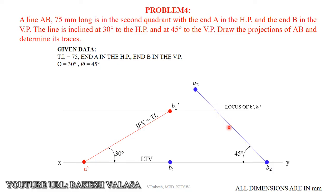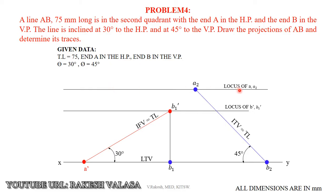This line from B2 to A2 makes 45 degrees to the VP and is the initial top view, which represents the true length. Now draw the locus line at A2 — on the locus of A2 we can get the final top view point. From the initial top view we can get the length of the front view. Draw a vertical projector from A2 to the locus of B2 to get point A2 dash. The segment A2 dash B2 is the length of the front view.